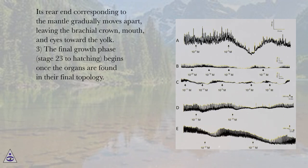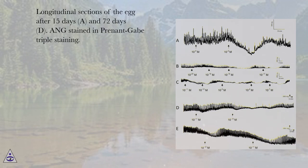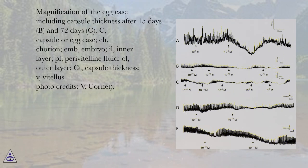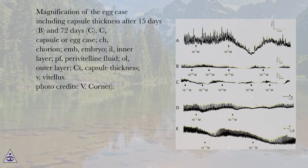The final growth phase (stage 23 to hatching) begins once the organs are found in their final topology. Longitudinal sections of the egg after 15 days (A) and 72 days (D), A and G stained and Periodic acid-Schiff triple staining. Magnification of the egg case including capsule thickness after 15 days (B) and 72 days (C). Labels: C, capsule or egg case; H, chorion; M, embryo; E/L, inner layer; PF, perivitelline fluid; O, outer layer; CT, capsule thickness; V, vitellis.